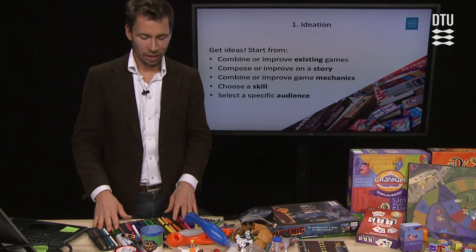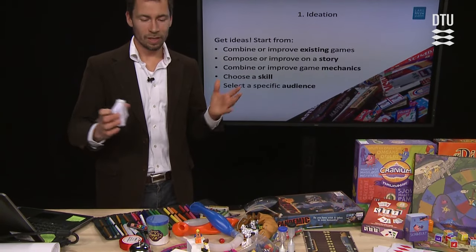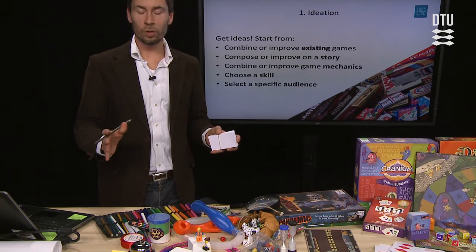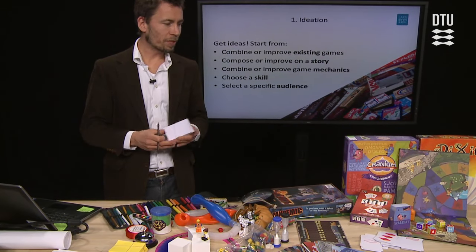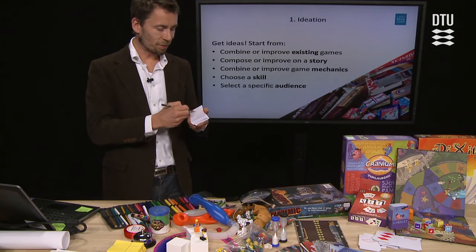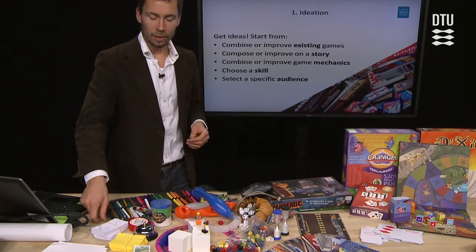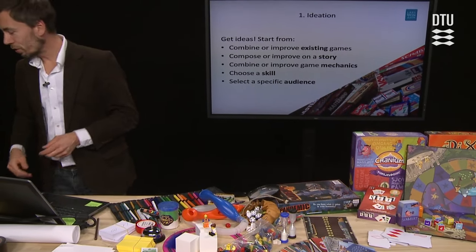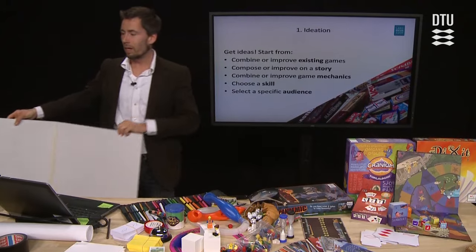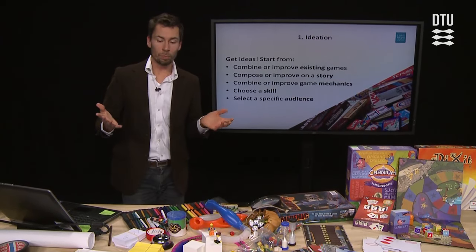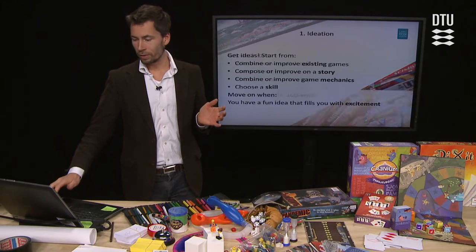As you get started, you should begin writing things down on your components to make it more physical as you go along — but never in more detail than you can discard and begin all over. Index cards are really helpful for writing and combining ideas. Different kinds of counters or dice are also always helpful. And since we are developing a board game, I would surely recommend finding a piece of hard cardboard as large as possible to carry around and start drawing on, visualizing your board that everything will focus around.